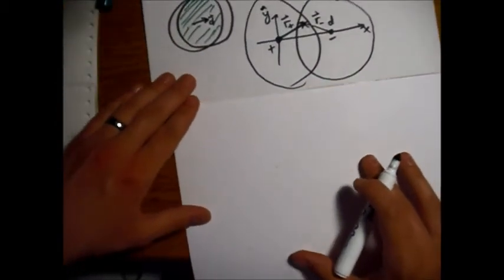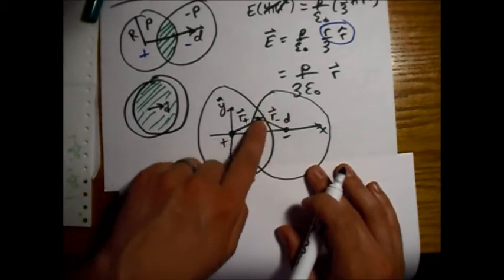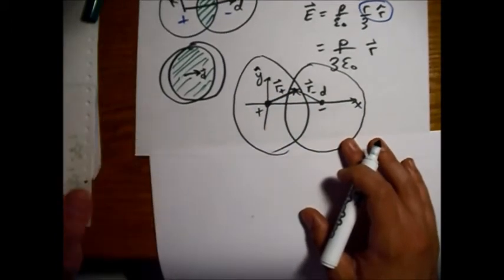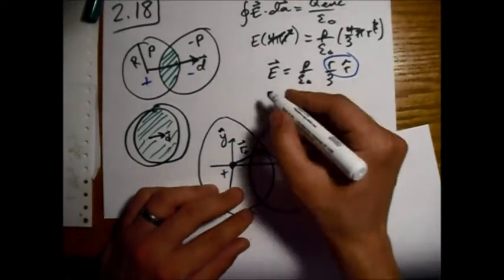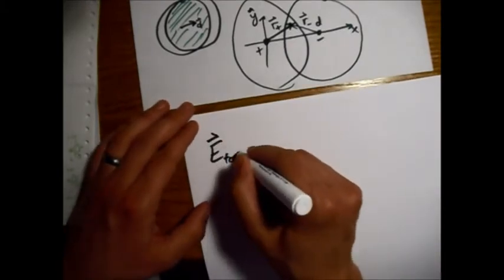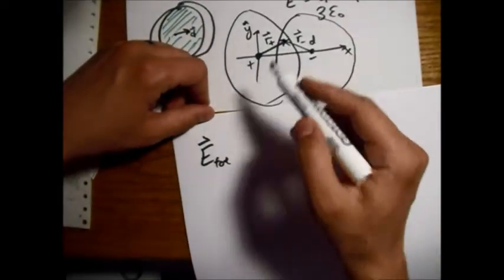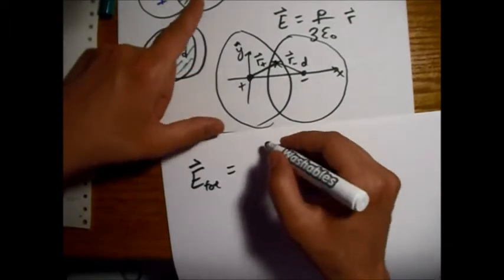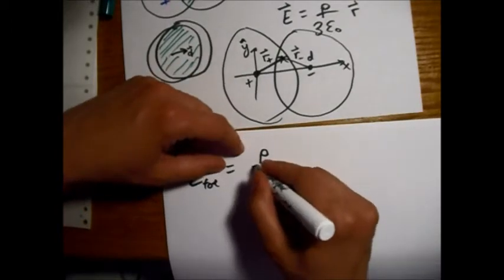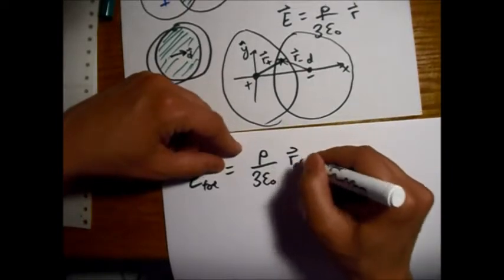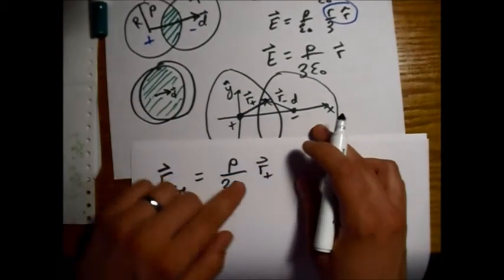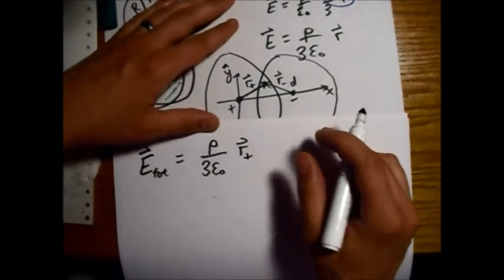But now when we want to find the electric field at any point inside here, we know we just have to add up these two vector, or the electric field from the two parts. And we know what that is, because we just found it. Okay, so the total electric field is going to be, so we have a positive component, which is the density is plus rho, 3 epsilon naught, and that is in the direction of the R plus vector, and also dependent on the magnitude, so how far away you are from the center of charge here.